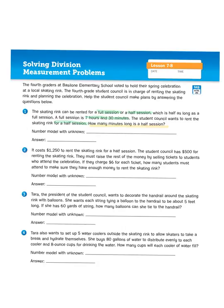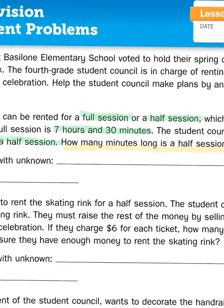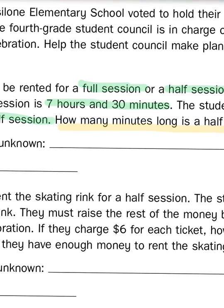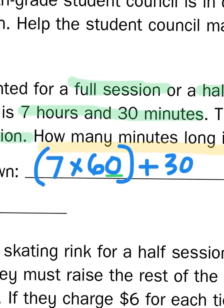Basically we divide the number of minutes for a full session by two. So let's set up our number model. It is useful to know that there are 60 minutes in an hour. So if there are 60 minutes in an hour, the first thing I would need to do is multiply the number of hours, 7, times the number of minutes per hour, which is 60. And then I'm going to add that total to 30, and that's going to give me my total amount of minutes in a full session. I know that 7 times 6 is 42, and if I multiply 7 times 6 tens, that's going to give me 42 tens, otherwise known as 420. Now I'm going to add 420 to 30 vertically so I can line up my place value. 420 plus 30 is going to give me 450.